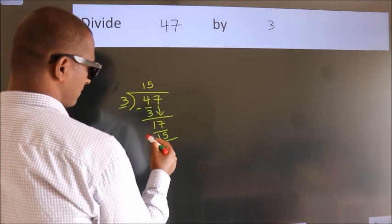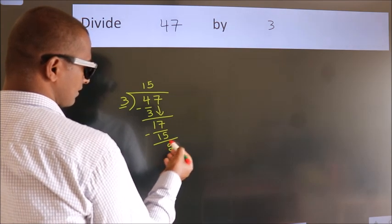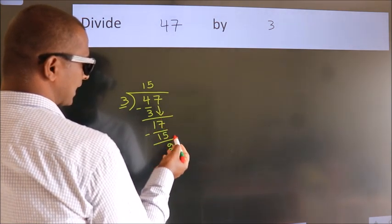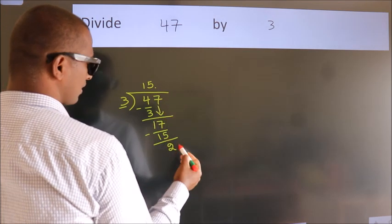Now we subtract. We get 2. After this, no more numbers to bring it down. So what we do is, we put dot, take 0.